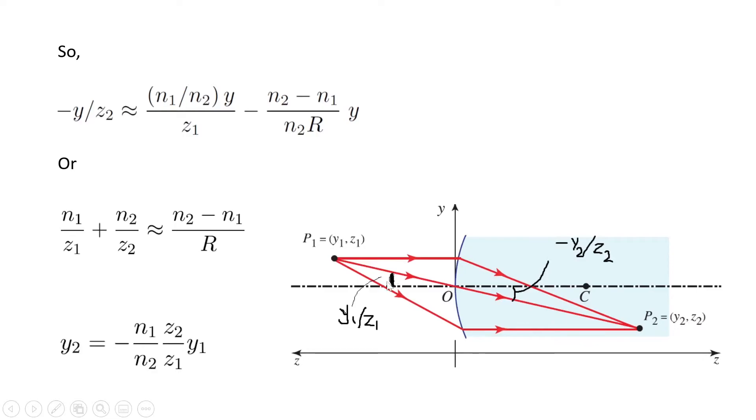Now, this angle is y1 over z1, and this angle is minus y2 over z2 because y is below the axis. Now, if I use Snell's law for this ray, for example, I can write y2 is minus n1 over n2, z2 over z1, y1.